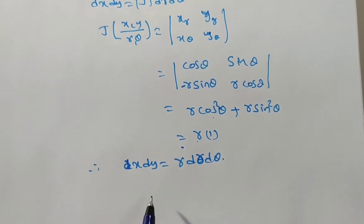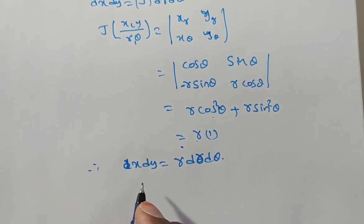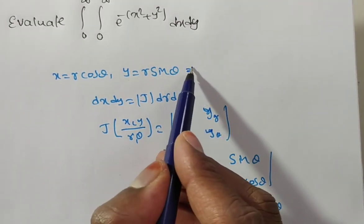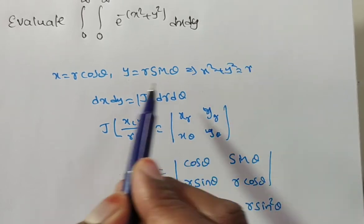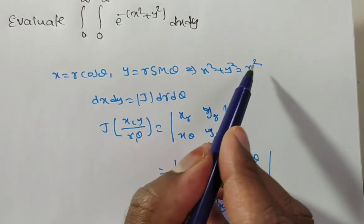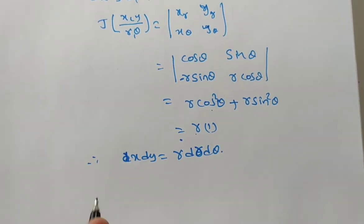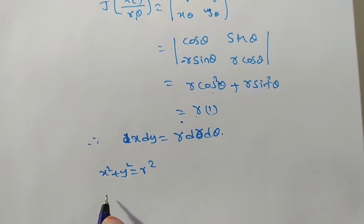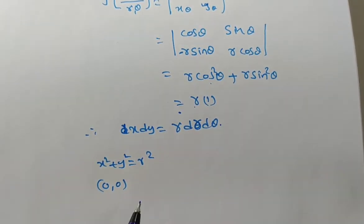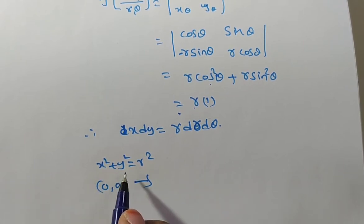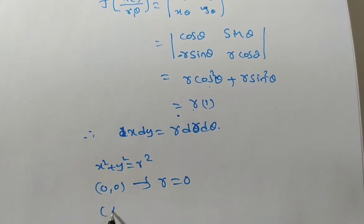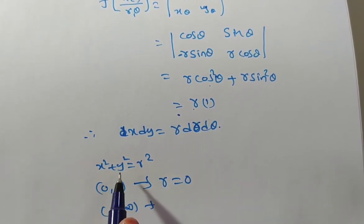Next, we also need to change the limits from x, y to r, theta. From x = r cos theta and y = r sin theta, we can write x squared plus y squared equals r squared cos squared theta plus r squared sin squared theta, which equals r squared. For limits: when x and y are 0, r is 0. When x and y are infinite, r squared is infinite, so r is also infinite.